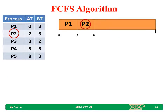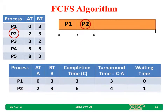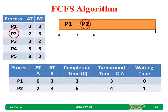Next is P2. When P1 completed at 3 milliseconds, P2 is next. It will be given the CPU for 3 milliseconds, completing at 6 milliseconds. Completion time is 6. Turnaround time is completion minus arrival: 6 minus 2 equals 4. Waiting time: CPU was given at 3 milliseconds, P2 arrived at 2 milliseconds, so waiting time is 3 minus 2 equals 1 millisecond.